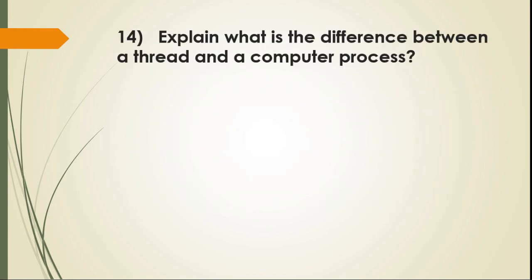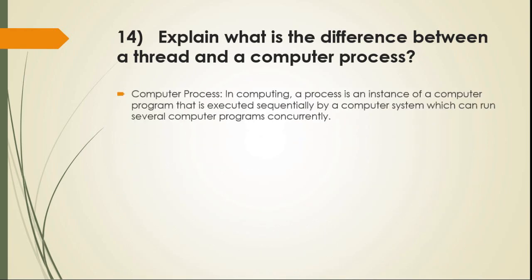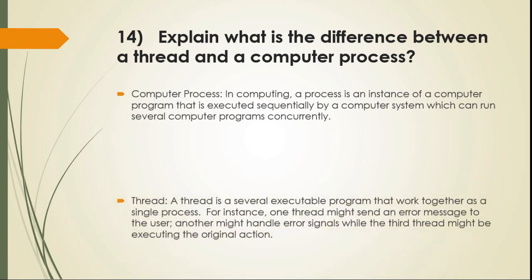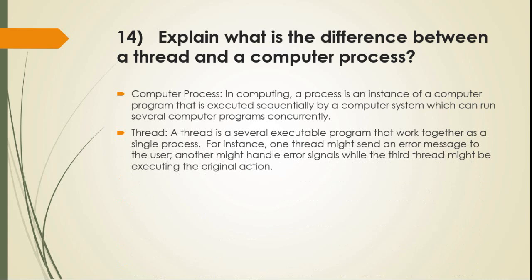Question 14: Explain what is the difference between a thread and a computer process? Computer Process: a process is an instance of a computer program that is executed sequentially by a computer system, which can run several computer programs concurrently. Thread: a thread is a set of executable programs that work together as a single process. For instance, one thread might send an error message to the user, another might handle error signals, while a third thread might be executing the original action.